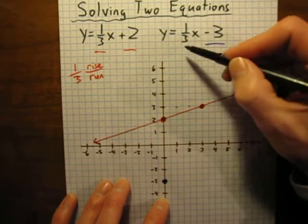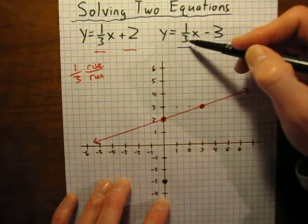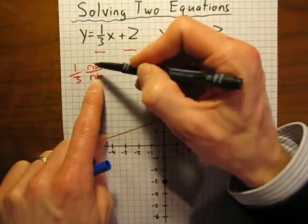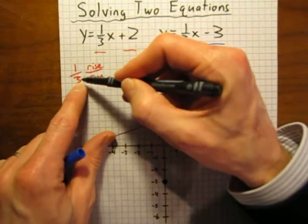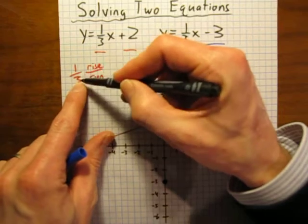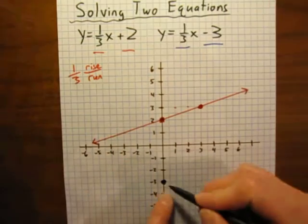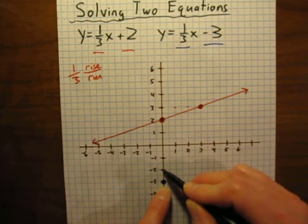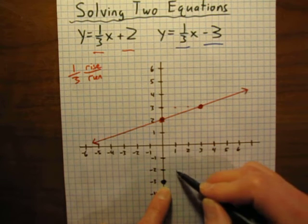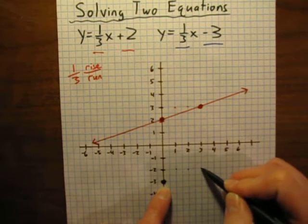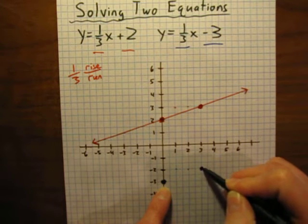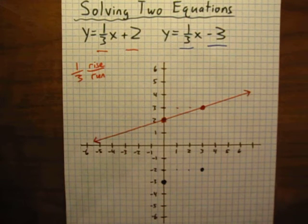The slope is the same as the other equation. It's 1/3. Remember, slope is rise over run. So we're going to go up one, over three. So we start here at our y-intercept. We go up one. We go to the right, one, two, three. There is another point on our line.